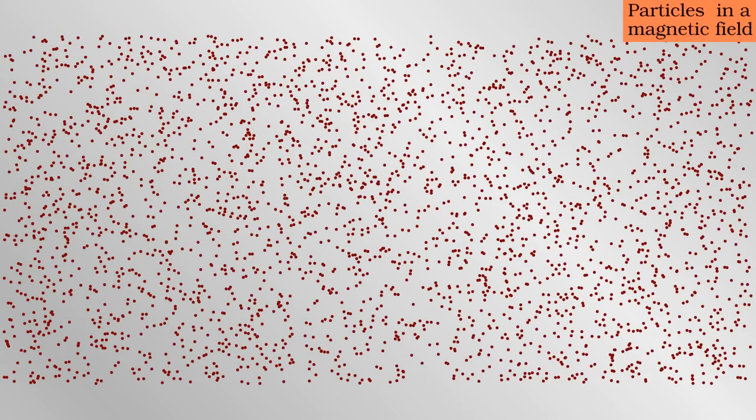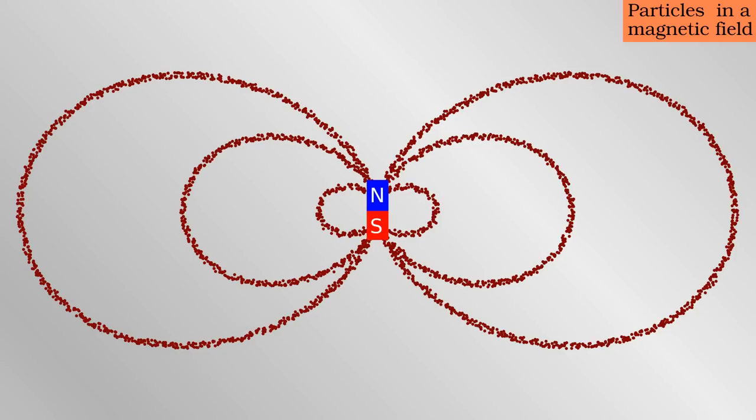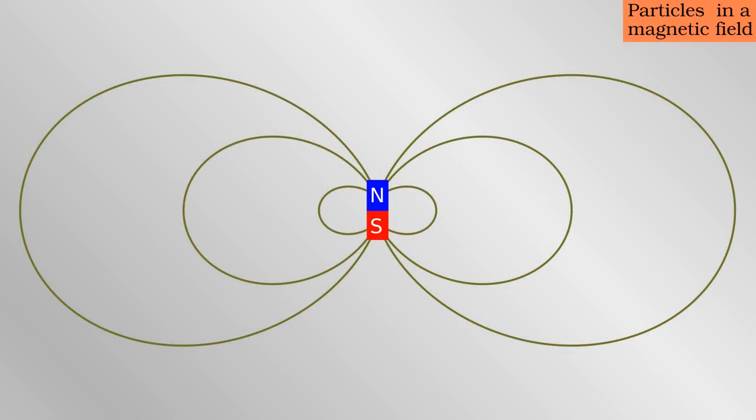At school you may have performed an experiment where you looked at iron filings around a permanent magnet. The filings line up along so-called magnetic field lines. These are the lines you would trace out if you took a magnetic compass and followed the arrow from the north pole to the south. In other words the magnetic field points along the field line.